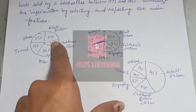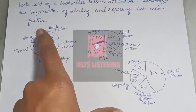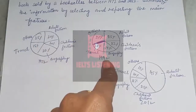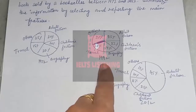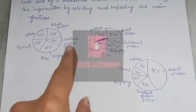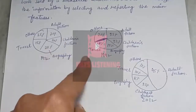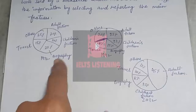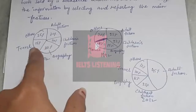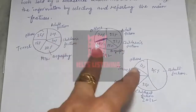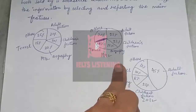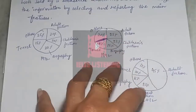In 1972 these two fictions and biography had a similar percentage — others 25%, biography 12%, 15% — and after 1972, in 1992, after two decades, adult fiction increased, children's fiction also increased, but biography decreased by 5% and travel also increased by 2%, while others decreased. So in these two decades, biography decreased and the rest all three increased.